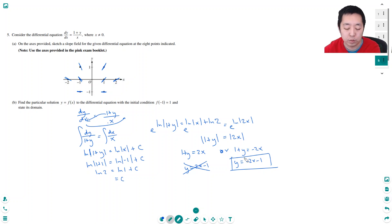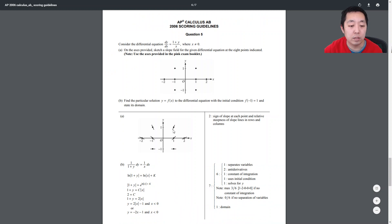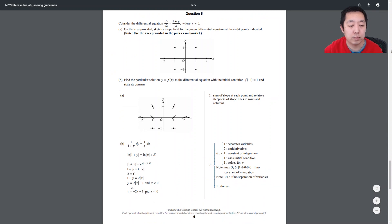Okay, so that was a pretty short problem. Let's take a look at the answer key. So that all looks right. Negative 2x minus one.